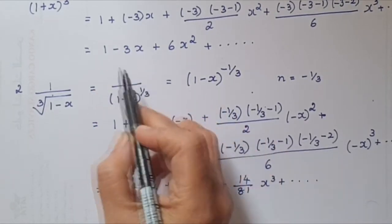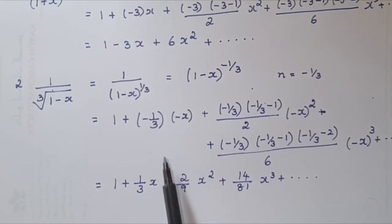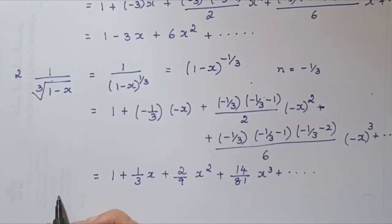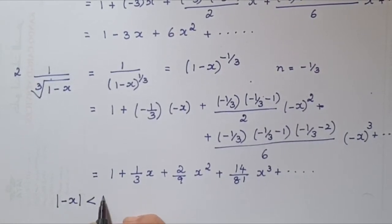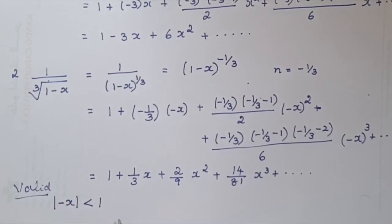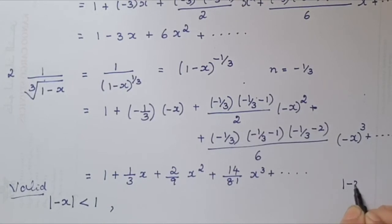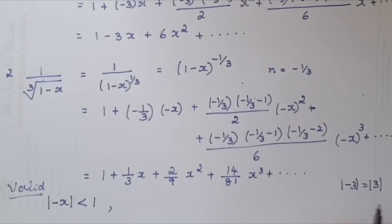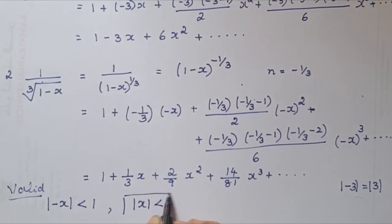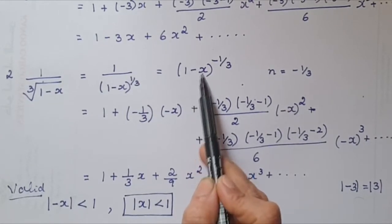The second part asks for which values the expansion is valid. To determine this, look at what appears alongside x inside the bracket. It has to satisfy |−x| < 1. Since |−x| = |x|, the expansion is valid for |x| < 1.